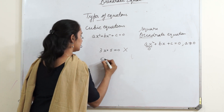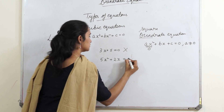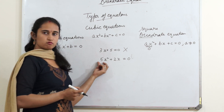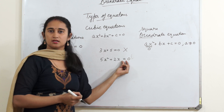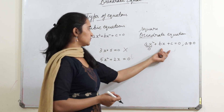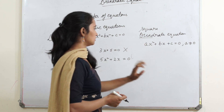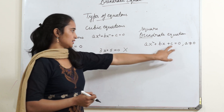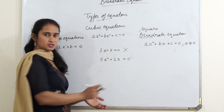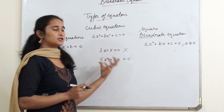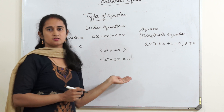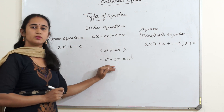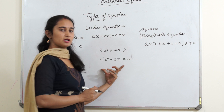If I have 5x squared plus 2x equals to 0 — is this a quadratic equation? You must be thinking there is x squared and 2x, but there is no c term like in the standard form ax squared plus bx plus c equals to 0. There is nothing to worry about, because that c is 0 here — that's why it's not shown. Yes, it is quadratic, because the condition for quadratic is always that the highest degree of x should be 2. So yes, this is a quadratic equation.